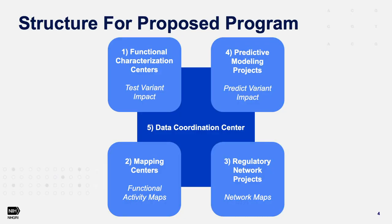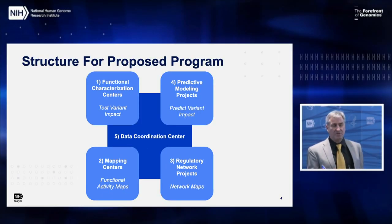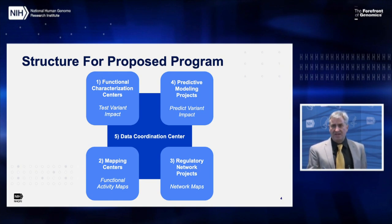I'd like to begin by quickly showing you the structure of the program so that it's not a surprise later. We expect to have five components, and we think it's very important for them to work together as a group. They're going to cover different aspects of how genome structure determines genome function and how variation affects genome function. We'll have centers that look at how elements function, centers that map activity of different elements, efforts to put elements and variants into networks and pathways, integrative analysis and predictive modeling, and a data coordinating center.